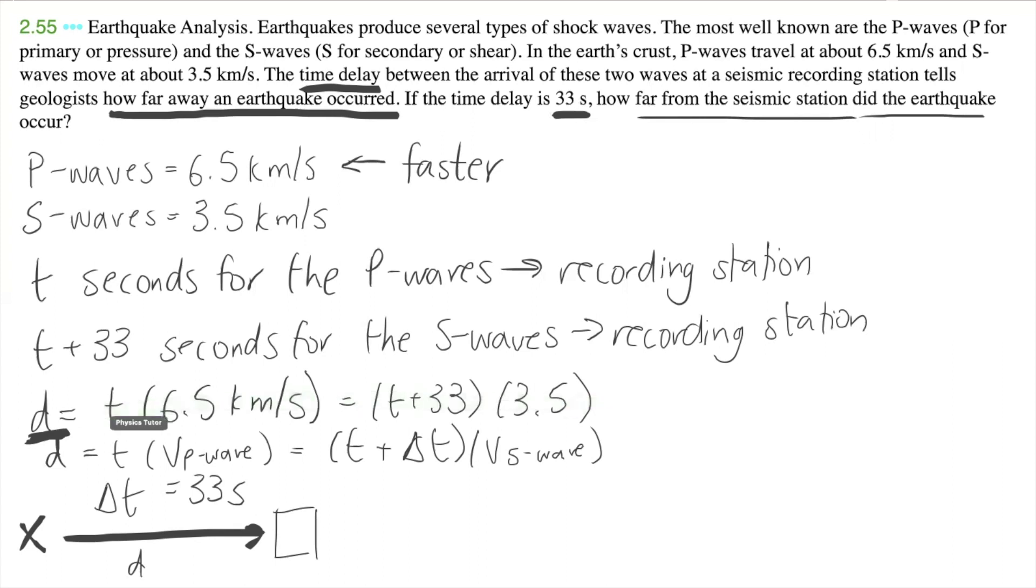So we have 6.5t is equal to 3.5t plus 3.5 times 33. And then we have 6.5 minus 3.5t is equal to 3.5 times 33. We get 3t is equal to 115.5 and then t is equal to 38.5 seconds.